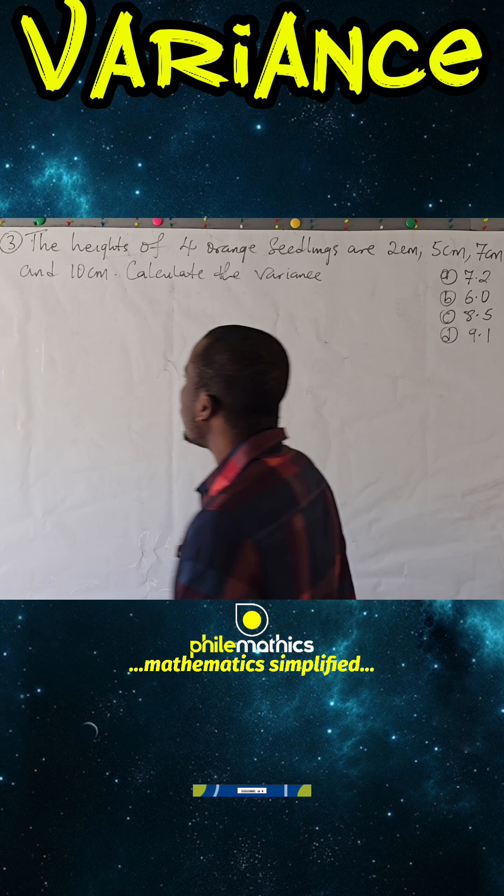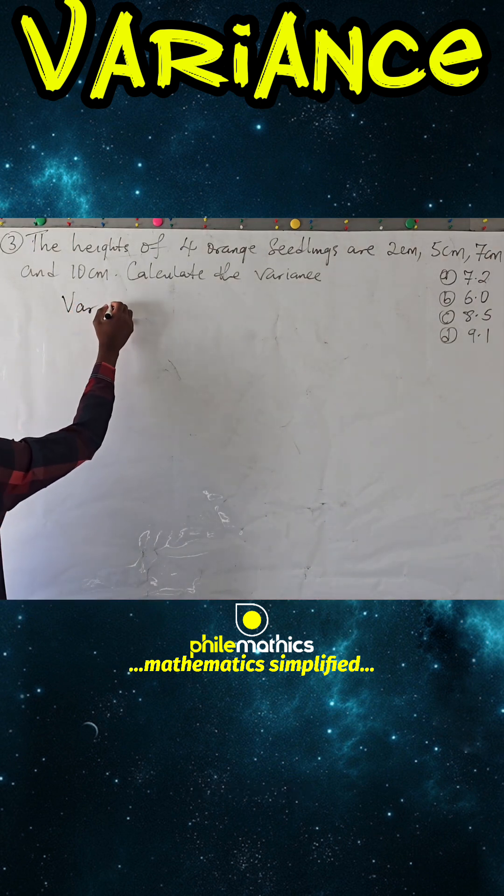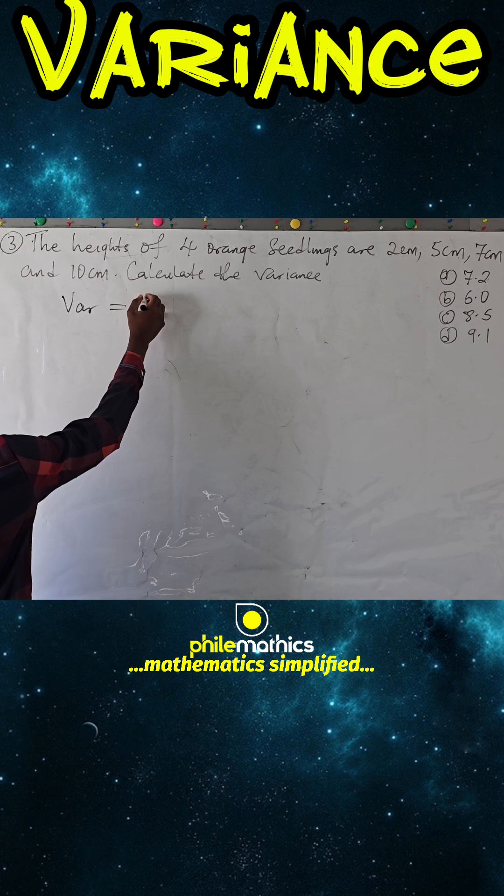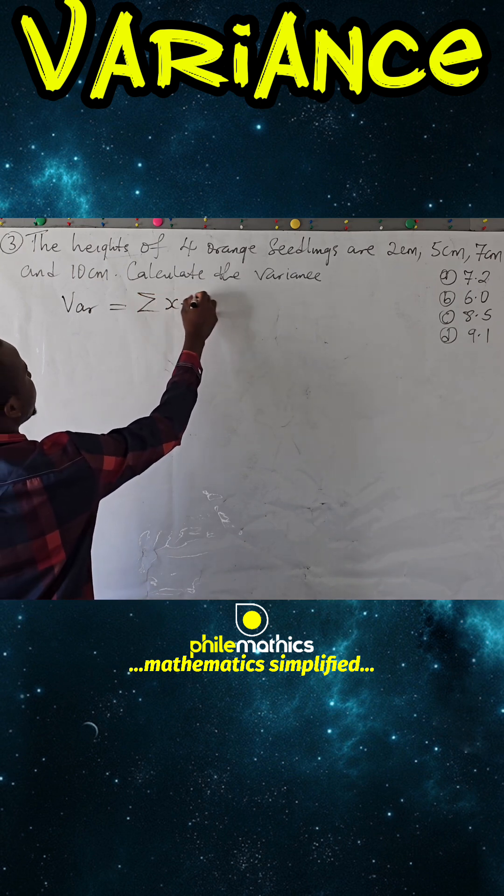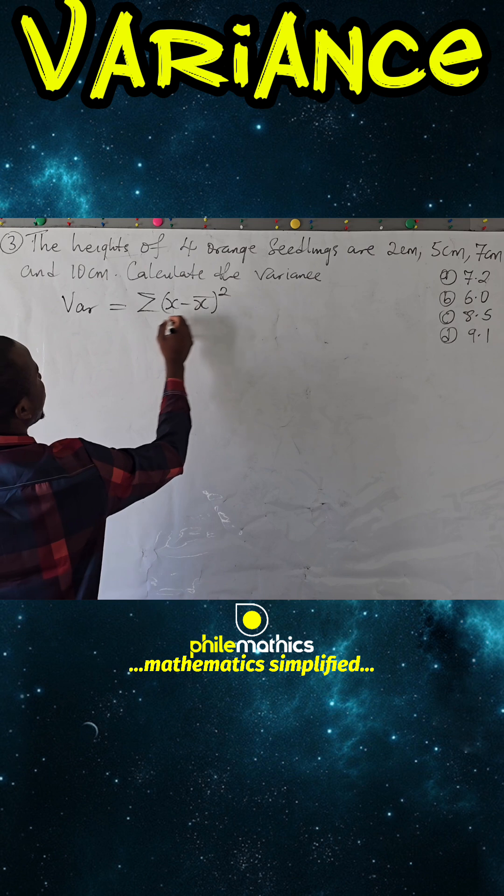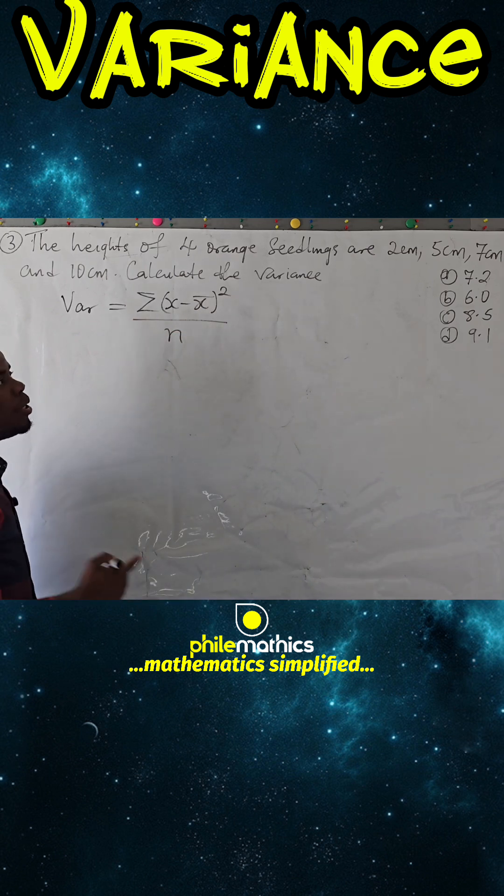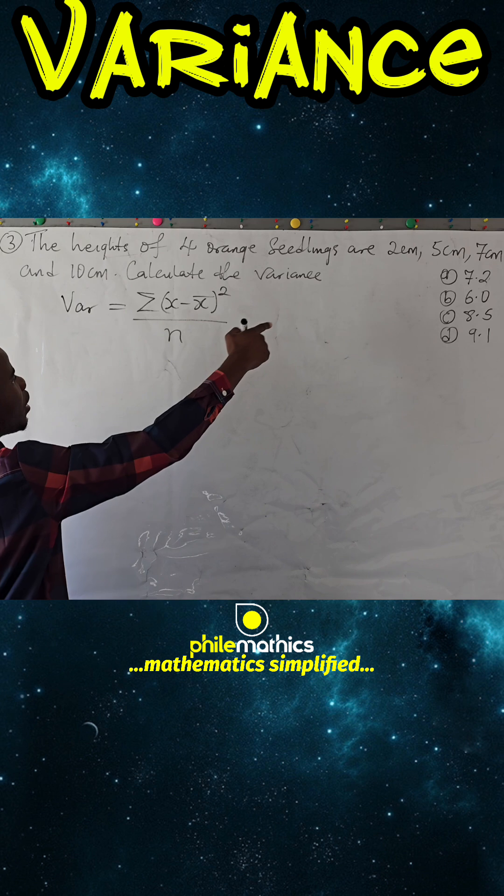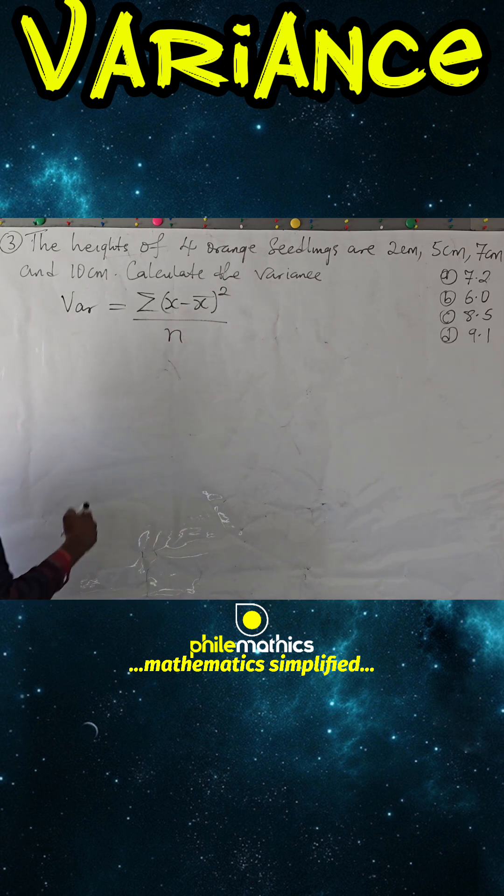You want to recall the formula for variance, which says summation of x minus x bar all squared over f, where x bar is the mean of the data, and so we need to find the mean first before we find the variance.